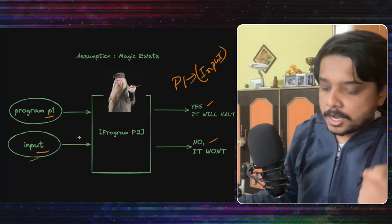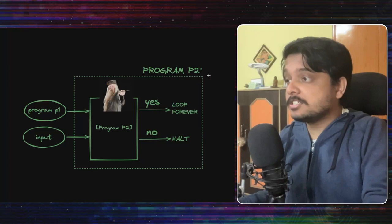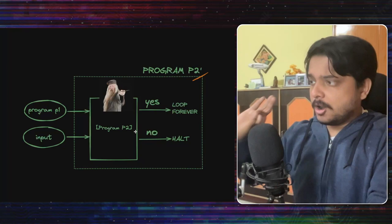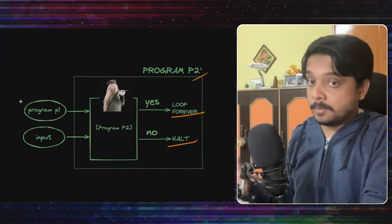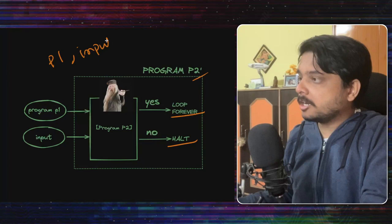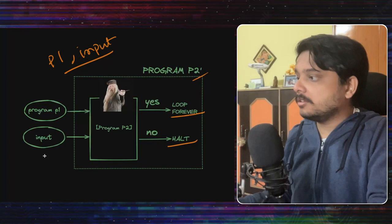What we do next is we extend this program a bit to create this new program called P2 dash, where what we do is if the output of P2 is yes, then P2 dash will loop forever. And if the output of P2 is no, then it will simply halt. And we are passing the same input parameters, which is program P1 and the input to that program. So again, we are checking if P1 will be halting on this input.